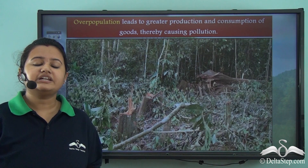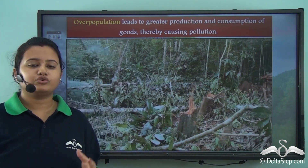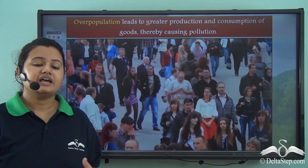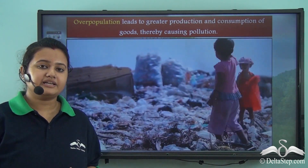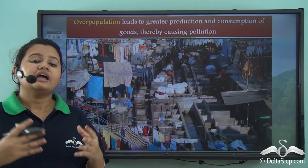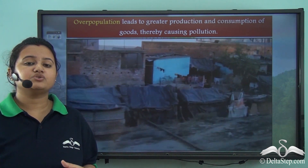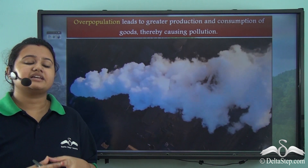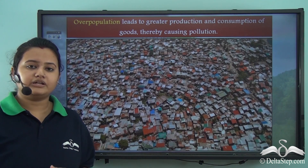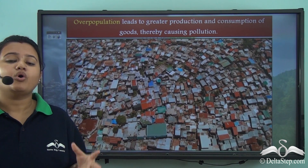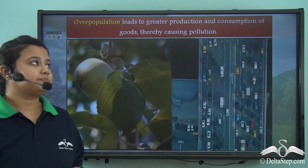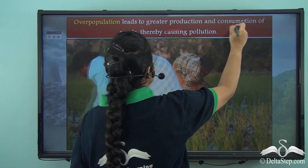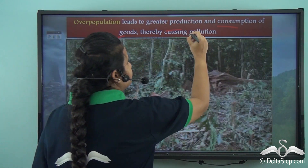Overpopulation leads to an increase in demand for food crops. As a result, chemical fertilizers have to be used to increase crop yield, and using chemical fertilizers pollutes land and water. Nowadays there has been increased use of vehicles, and vehicles release toxic gases into the environment which again cause pollution. Thus overpopulation leads to greater production and consumption of goods and thereby causes pollution.